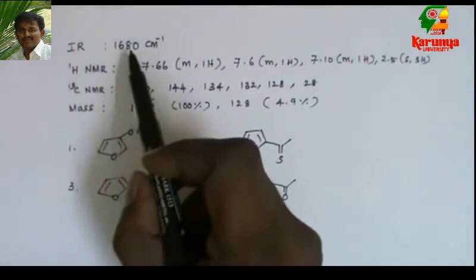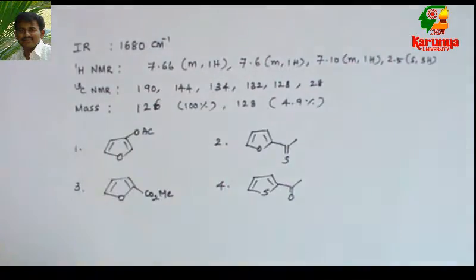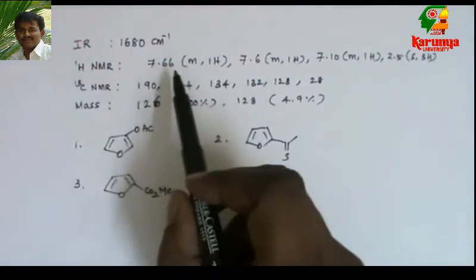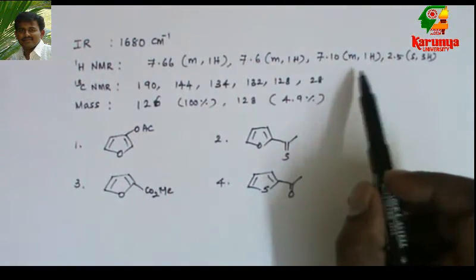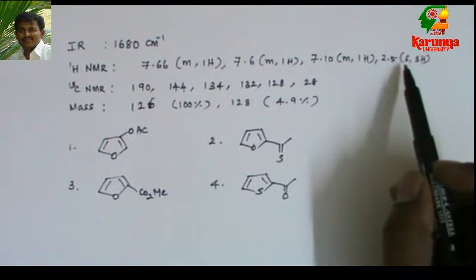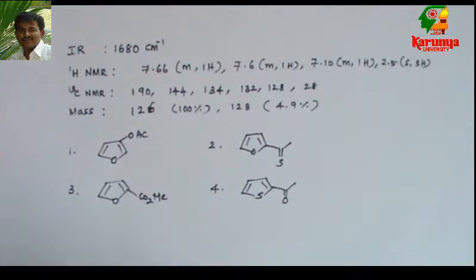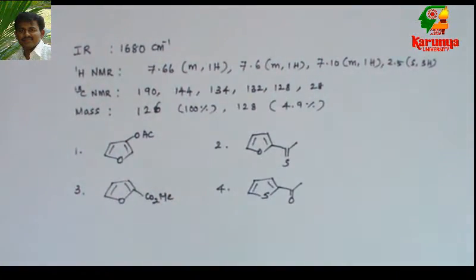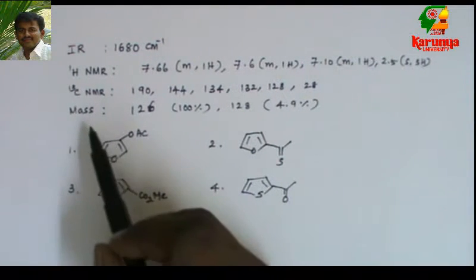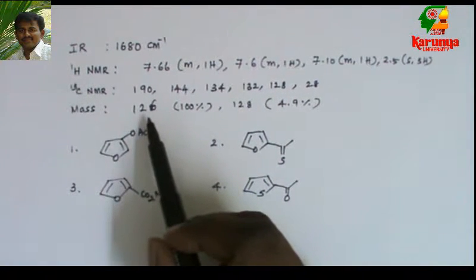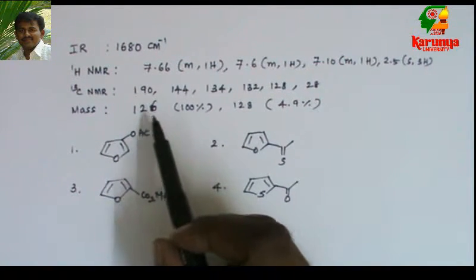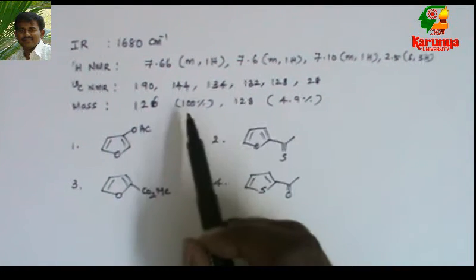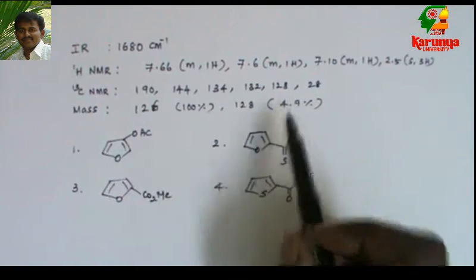IR: 1680 cm⁻¹. Proton NMR: there are 3 aromatic protons and 1 aliphatic proton at 2.5. 13C NMR: there are 6 signals. Mass spectrum: we get M and M+2 signals at 126 and 128, and the ratio is 104.9.